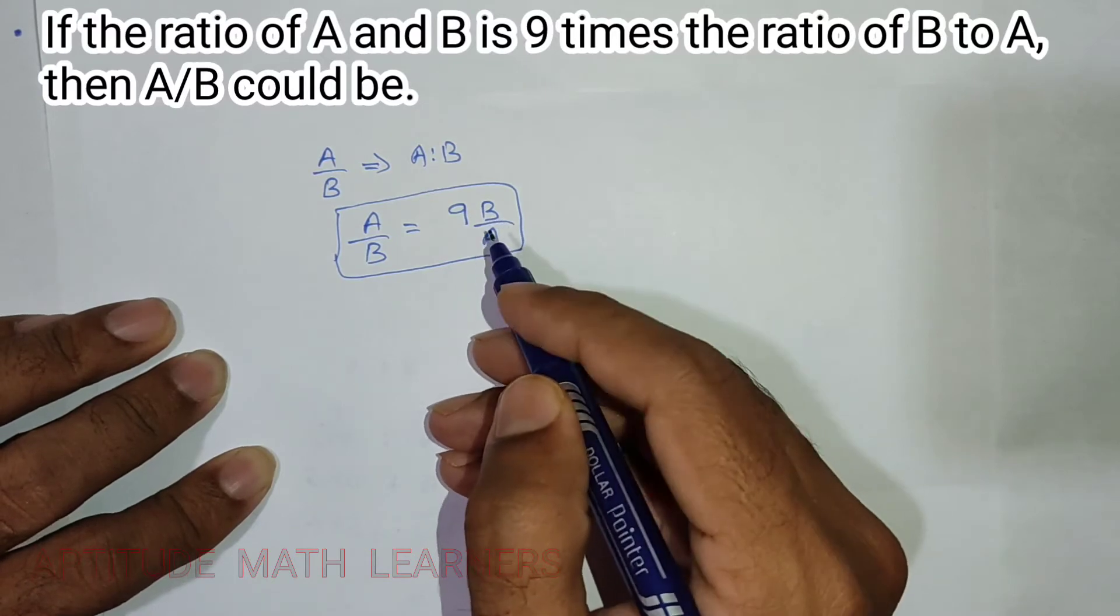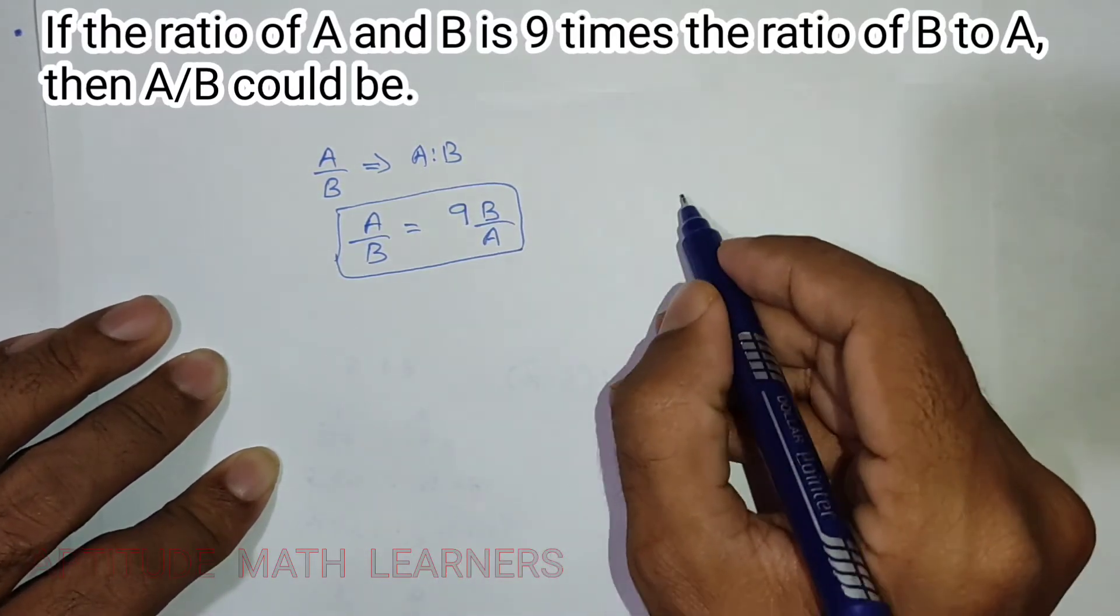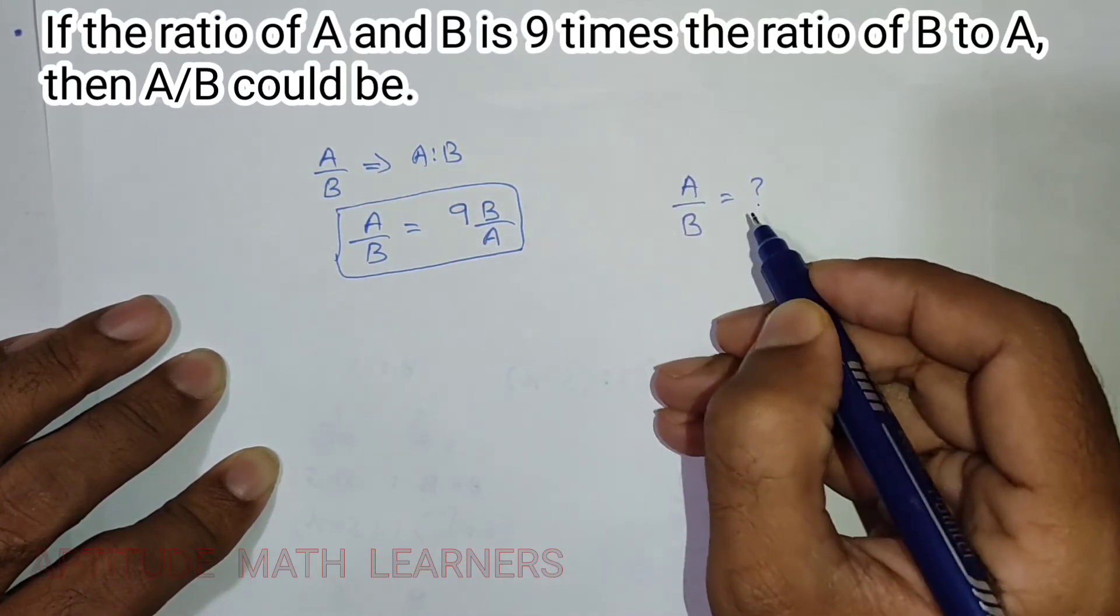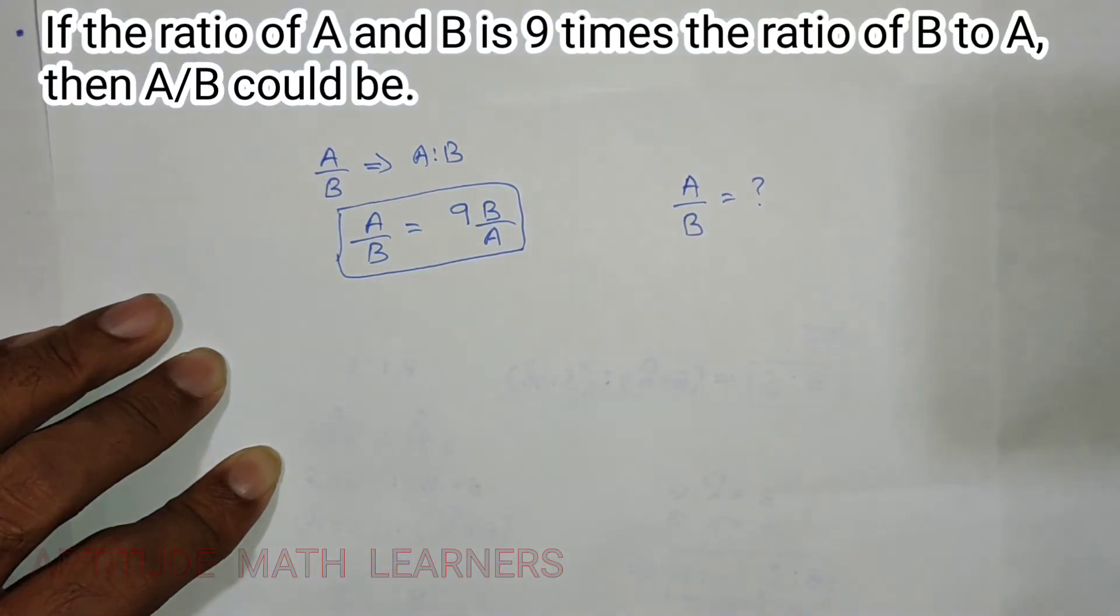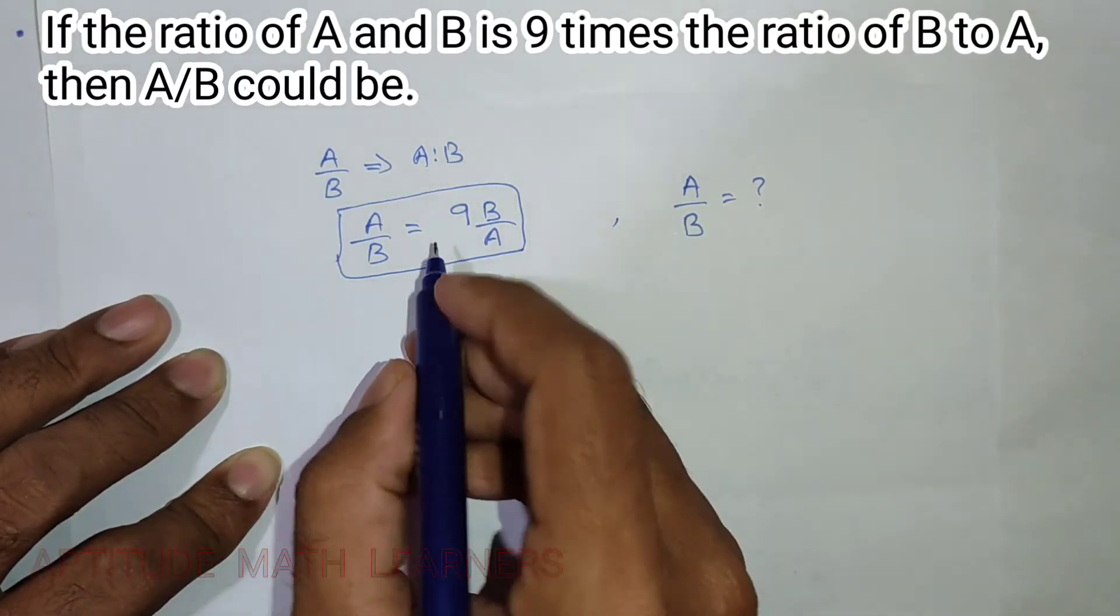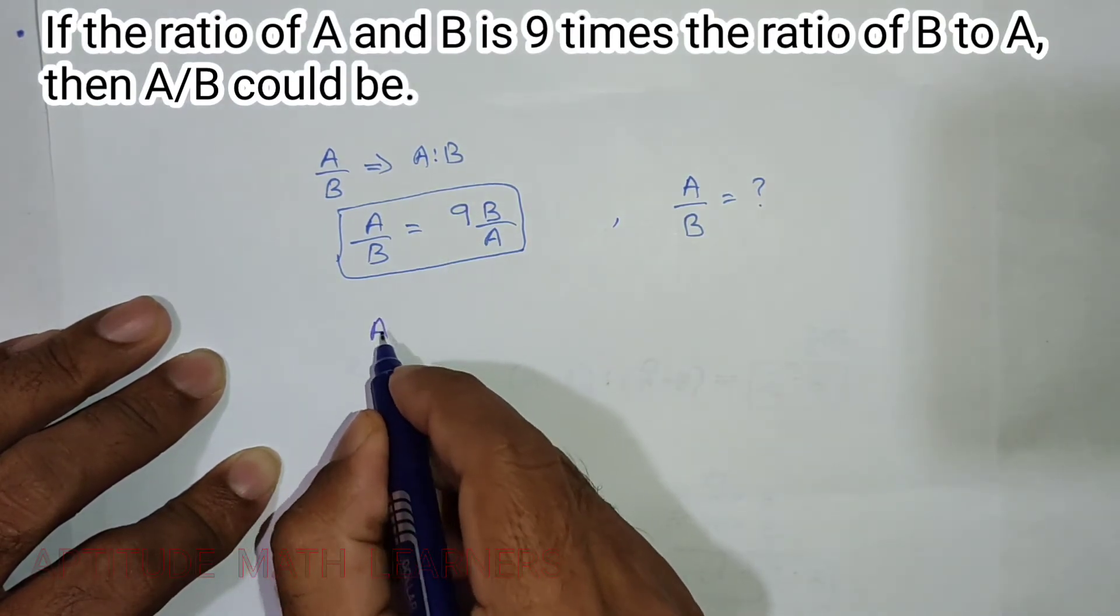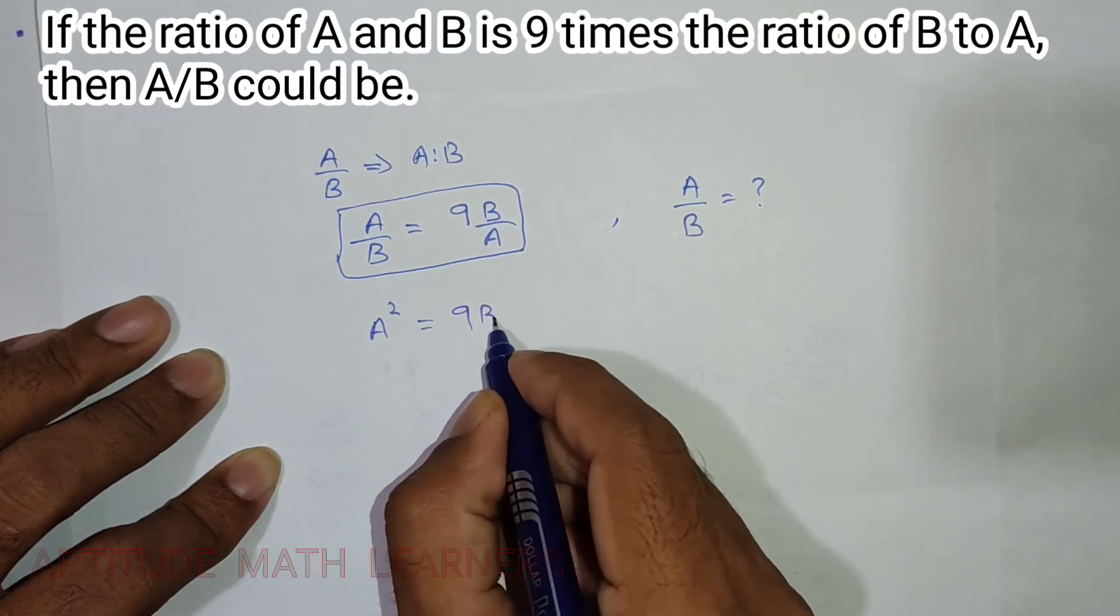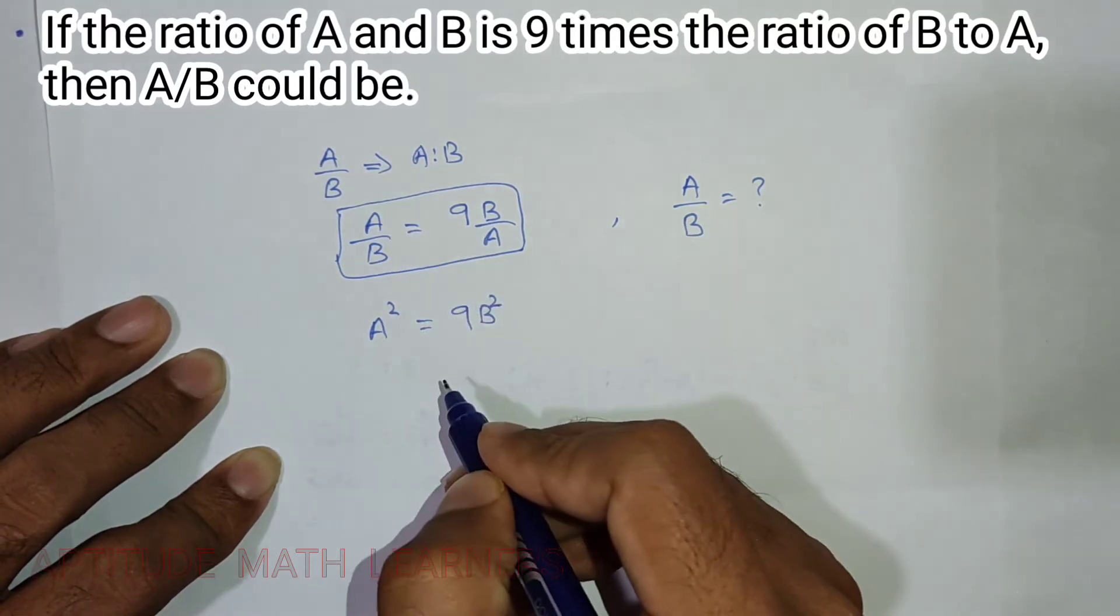When we cross multiply this, it becomes A squared is equal to 9B squared. We just cross multiplied it, so A multiplied by A becomes A squared.